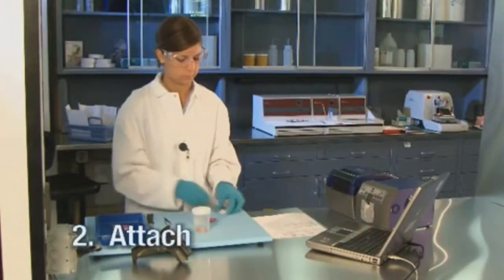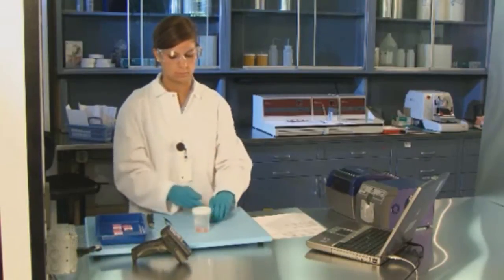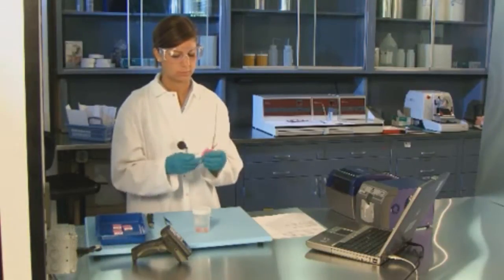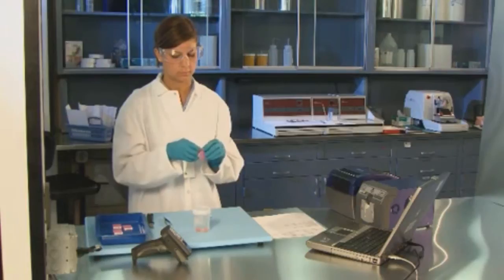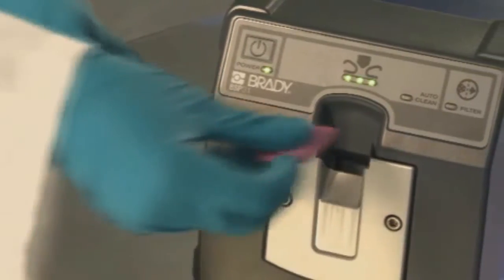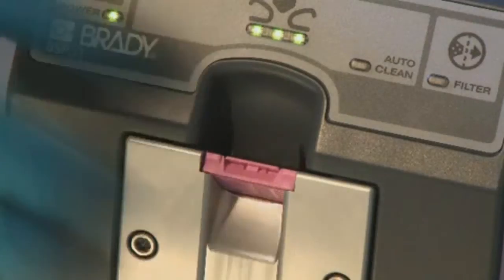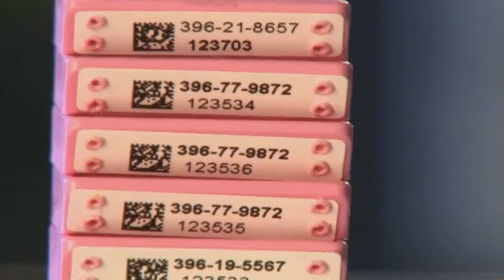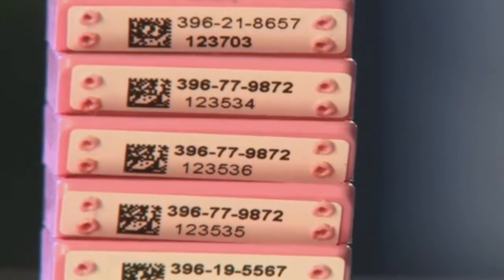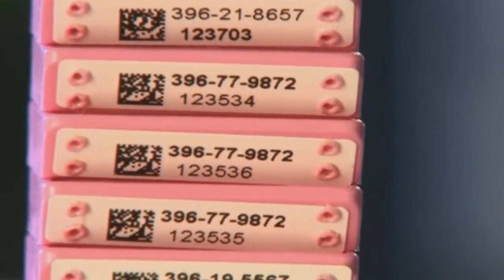After the labels have been printed, place the label onto the cassette and insert it into the Brady BSP31 label attachment system. The BSP31 system will mechanically fasten the label to the cassette through a revolutionary heat-staking process that permanently bonds the two pieces together with plastic rivets. These rivets provide the durability necessary for the lab labels to withstand tissue process protocols.